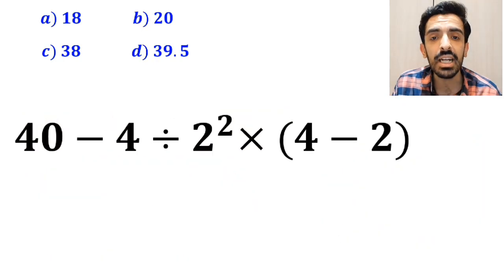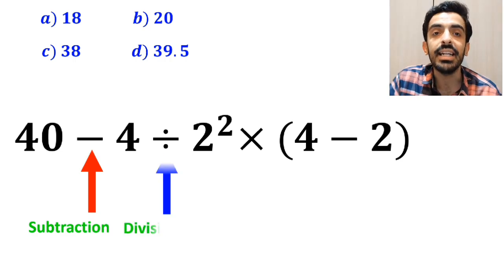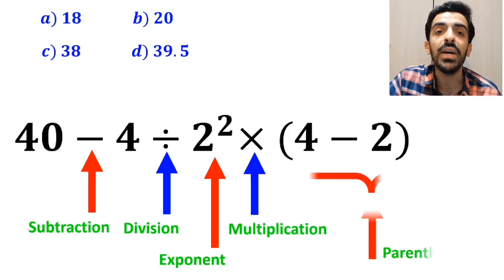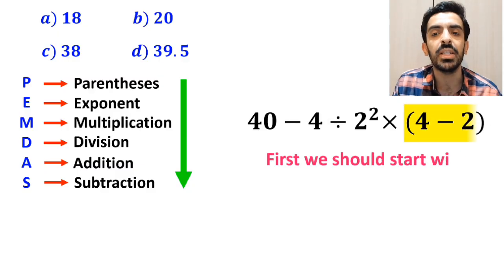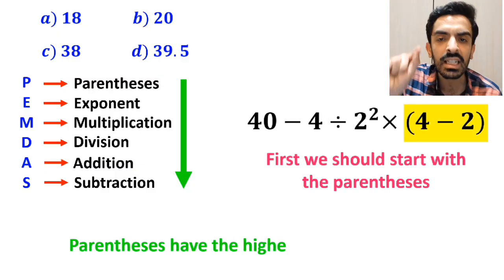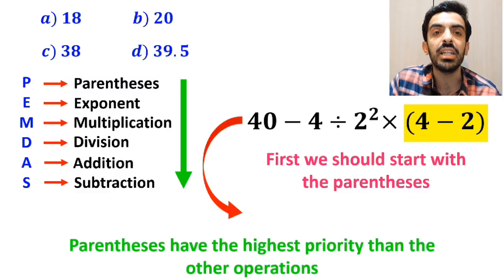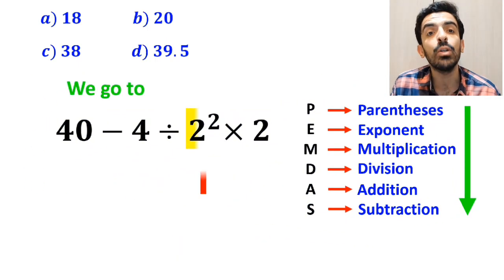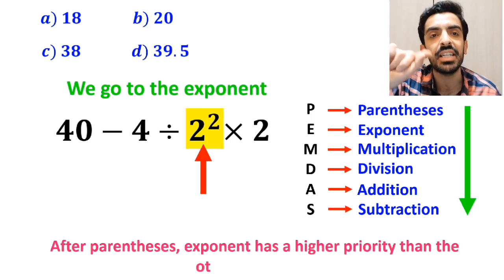As you can see on screen, this expression has a subtraction sign, then a division sign, then an exponent, then a multiplication, and finally parentheses. According to PEMDAS, we should start with the parentheses, because parentheses have the highest priority. This gives us 14 minus 4 divided by 2 squared, then times 2. In the next step, we go to the exponent, because after parentheses, the exponent has the next highest priority.